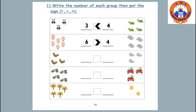How many chickens? One, two, three. And how many rabbits? One, two, three. So they are the same numbers — we should put equal to.